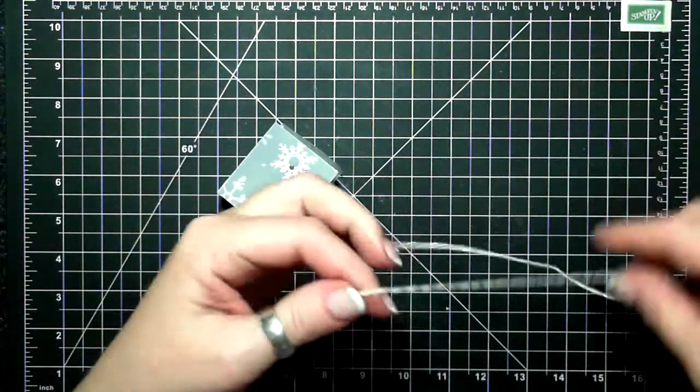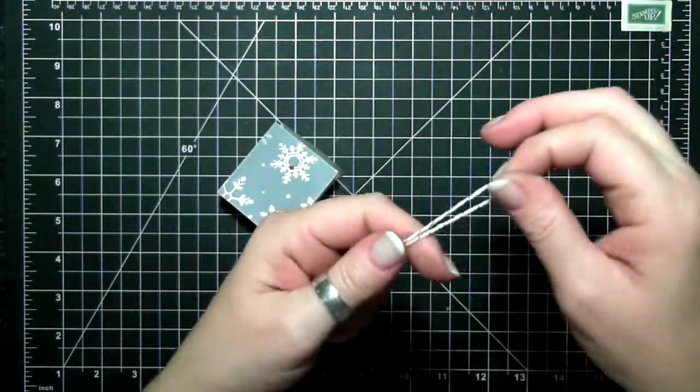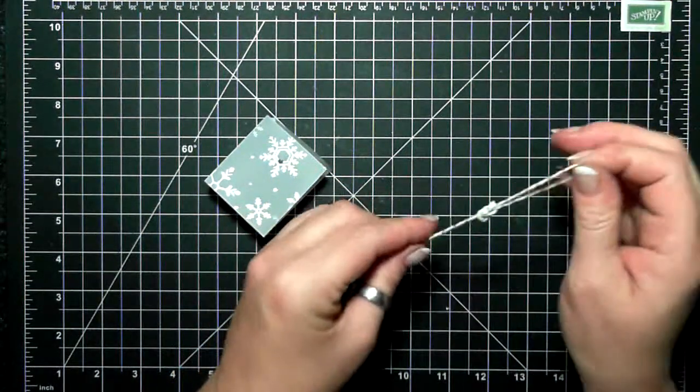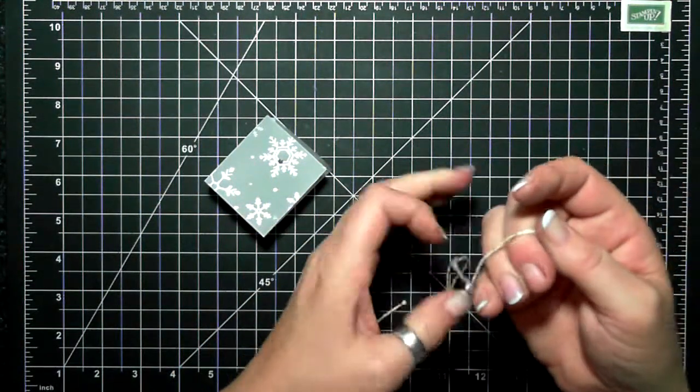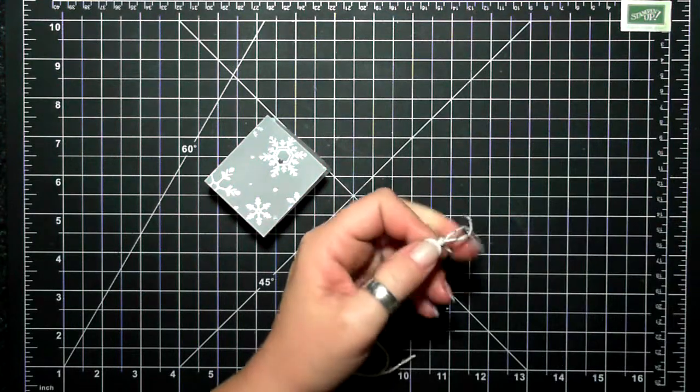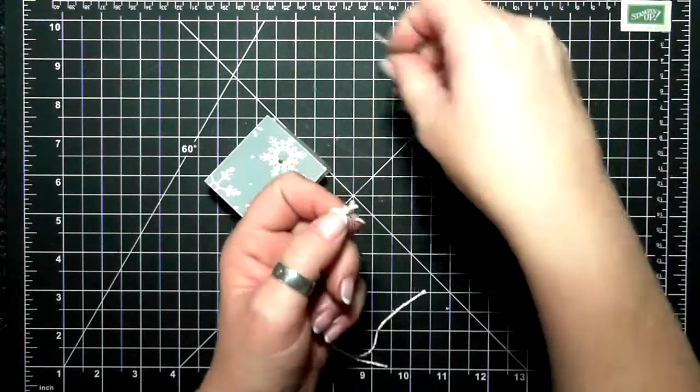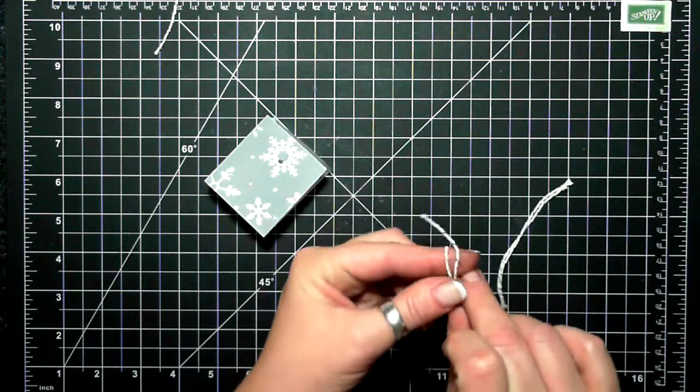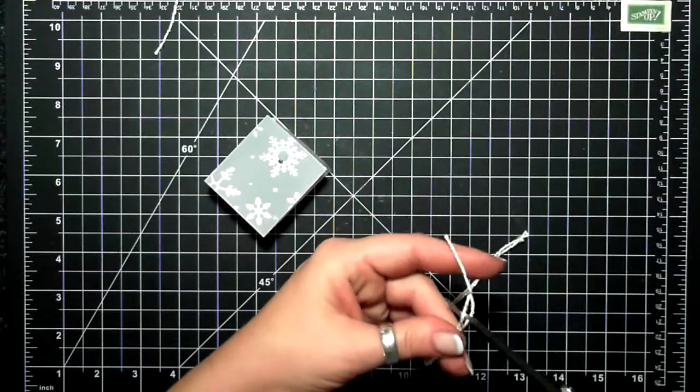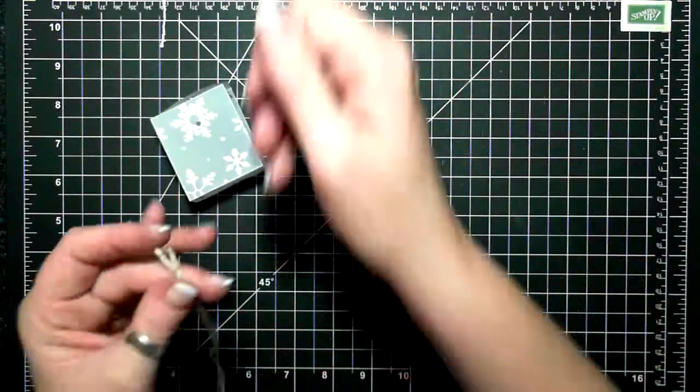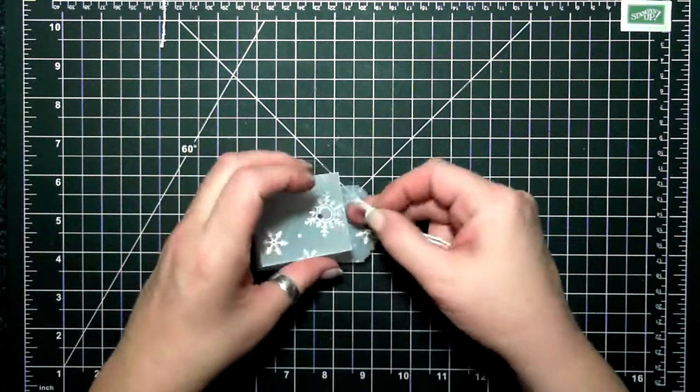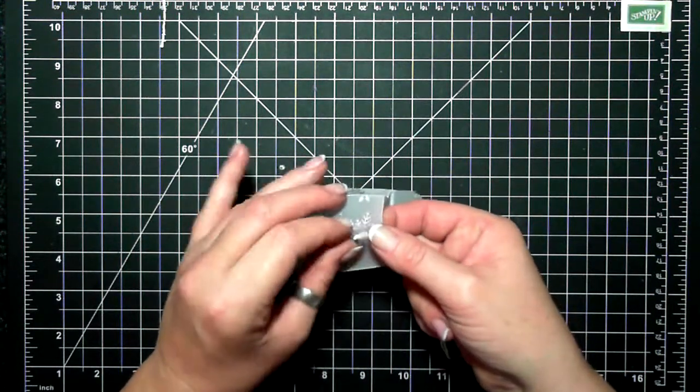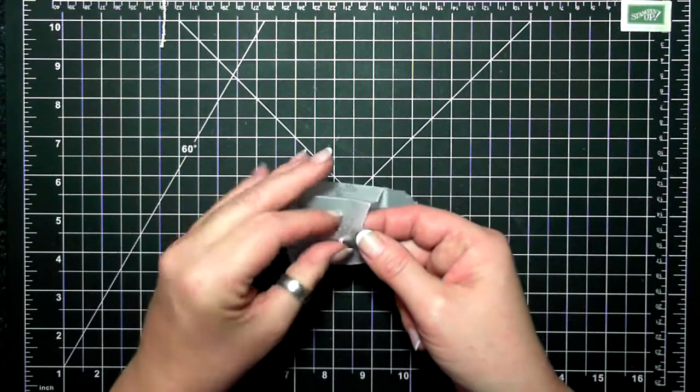Then I'm taking a little bit of the silver baker's twine and I'm tying a knot. You can see I'm wasting it too. I'll use that somewhere else, I promise. I feel bad when I waste stuff, but it's way easier to tie a bow with longer bits.